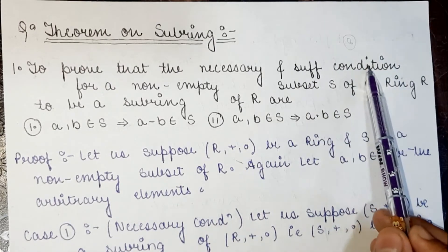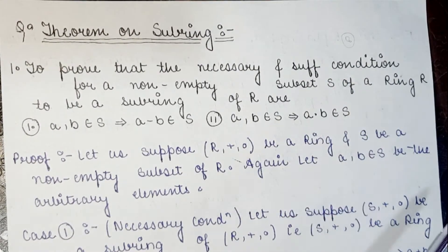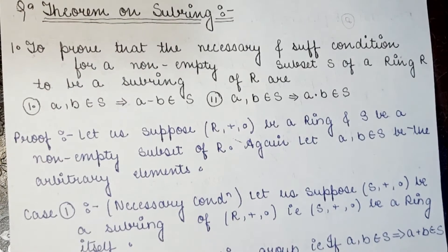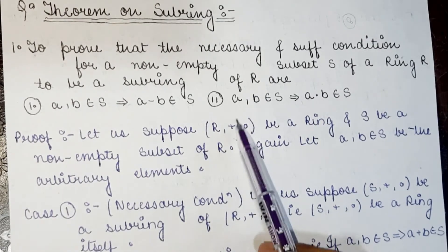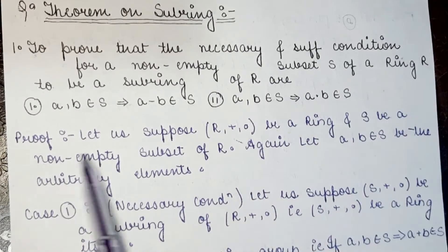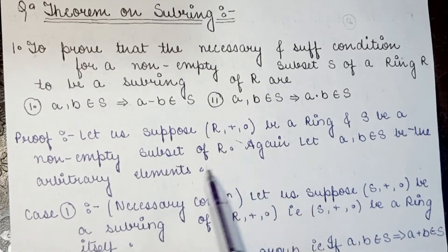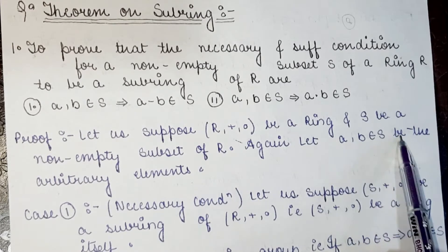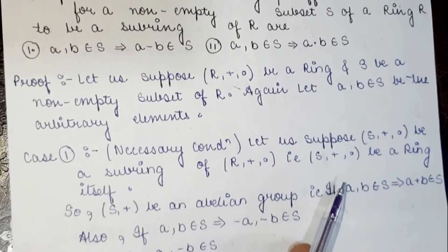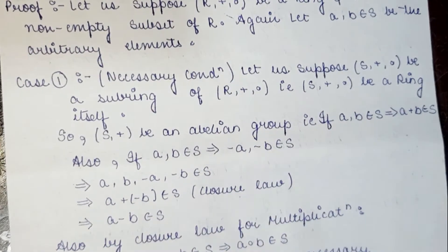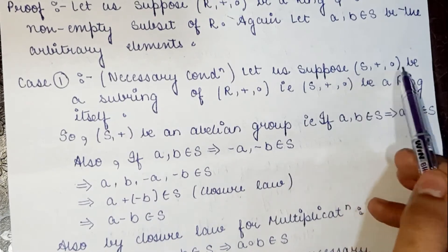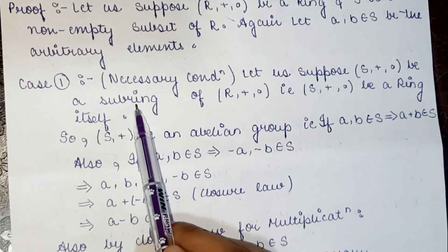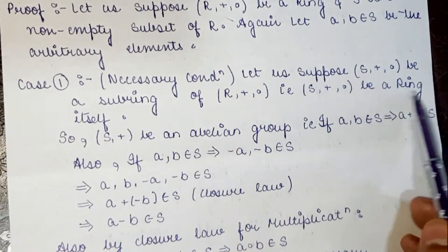For sufficient conditions, we assume the two conditions hold and show S is a subring. For necessary conditions, we assume S is a subring and show the two conditions are satisfied. Let R be a ring under addition and multiplication, and let S be a non-empty subset of R.